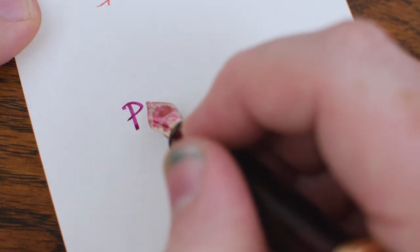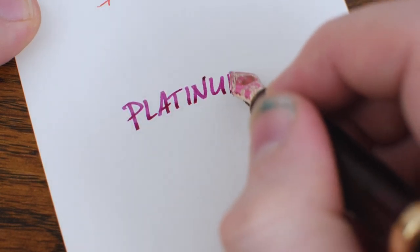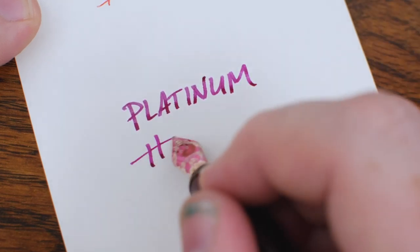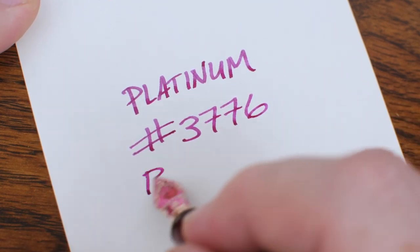The best part, by far, is the serious nibbage installed on this pen. The music nib produces a vertical stroke of about 1.1mm wide and a horizontal stroke of almost 0.5mm, making it a great alternative to the traditional stub.